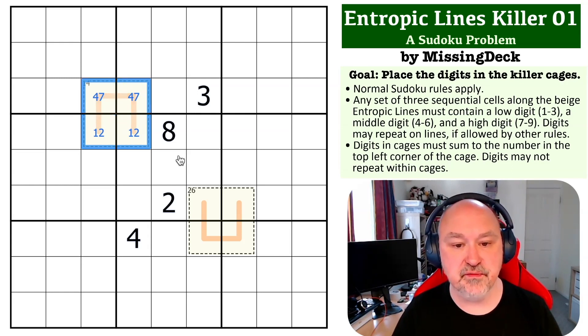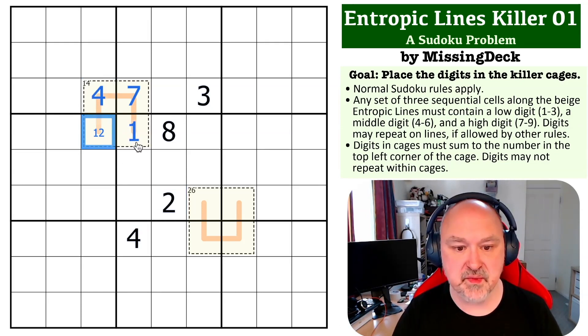So this must be one, two, four, seven. The four here makes this seven, which makes this four. And the two here makes this one, which makes this two.